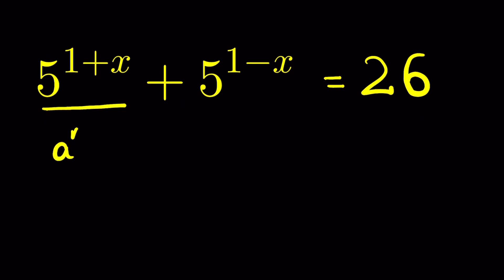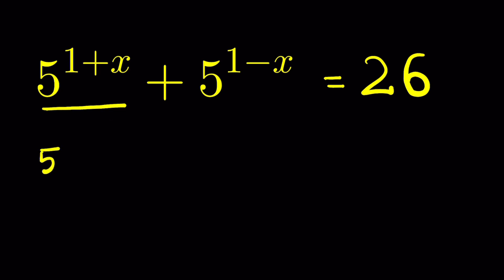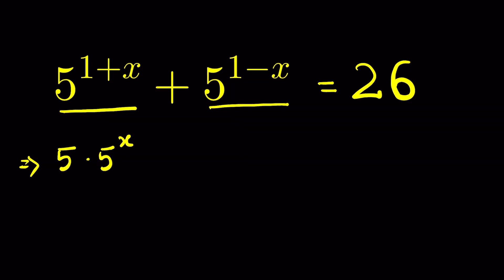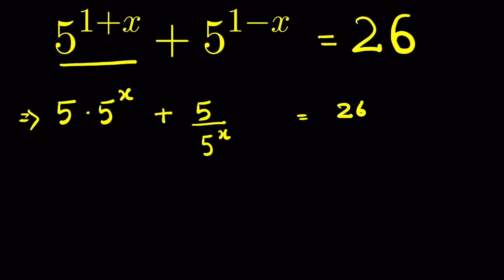This is in the form of a raised to the power m plus n, which equals a raised to the power m times a raised to the power n. So we can write 5 raised to the power 1+x as 5 times 5 raised to the power x. The second term is in the form a^(m−n), which equals a^m divided by a^n, so it becomes 5 divided by 5 raised to the power x. The equation is now 5 times 5^x plus 5 divided by 5^x equals 26.